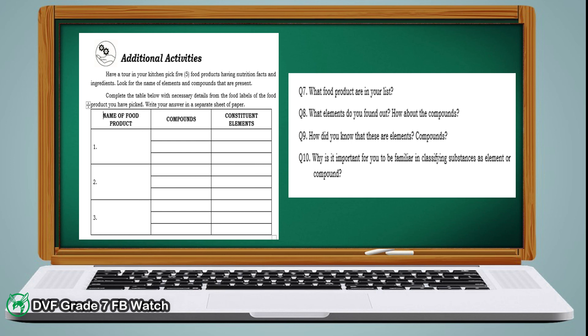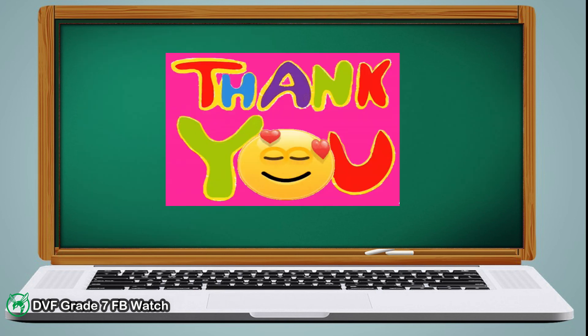Lastly, please answer the guide questions: question number 7 — what food products are in your list? Number 8 — what elements did you find? How about the compounds? Number 9 — how did you know that these are elements and compounds? Number 10 — why is it important for you to be familiar with classifying substances as elements or compounds? And that's all for today. Thank you!